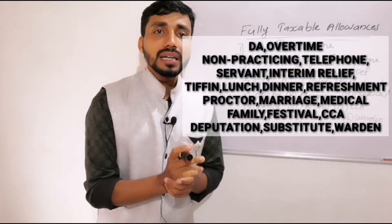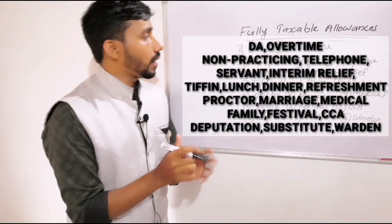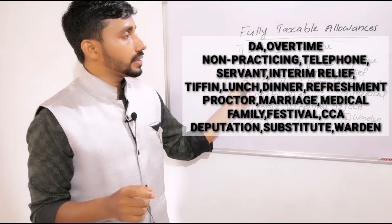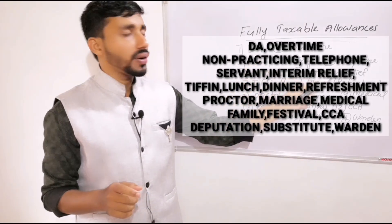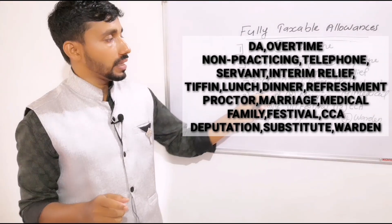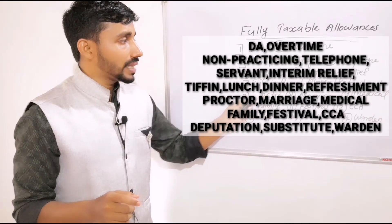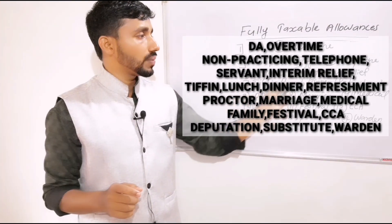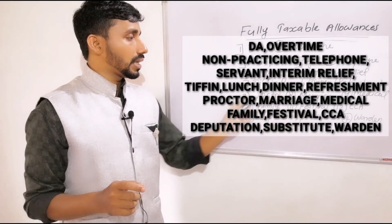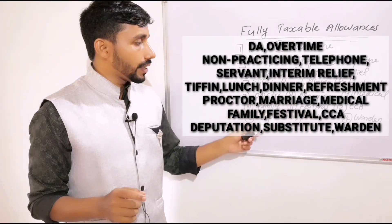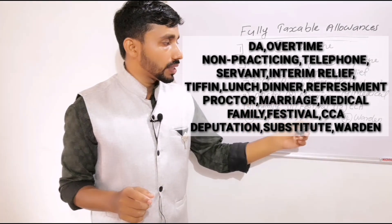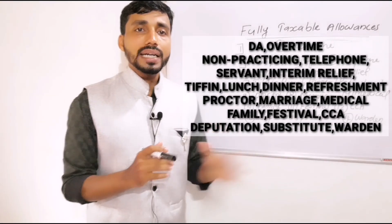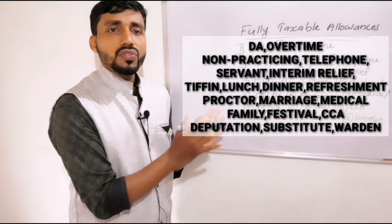To summarize all fully taxable allowances: Dearness Allowance, Overtime Allowance, Non-practicing Allowance, Telephone Allowance, Servant Allowance, Interim Relief Allowance, Tiffin or Lunch or Dinner or Refreshment Allowance, Proctor Allowance, Marriage Allowance, Medical Allowance, Family Allowance, Festival Allowance, CCA, Deputation Allowance, Substitute Allowance, and Warden Allowance. All of these are fully taxable.